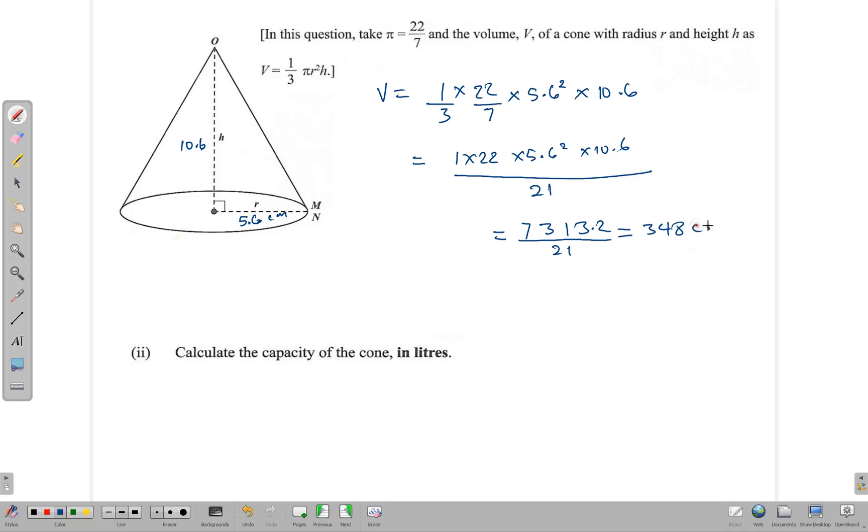Now, 348 cm³ is the same thing as 348 mL. 1000 cm³ is the same thing as 1000 mL, which is the same thing as 1 liter. So because we want our answer in liters, we need to divide 348 by 1000, and that gives us 0.348 liters. That's the capacity of the cone.